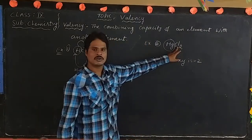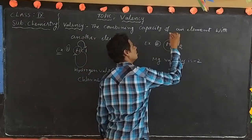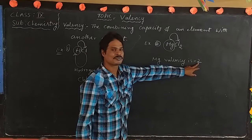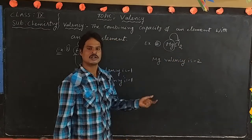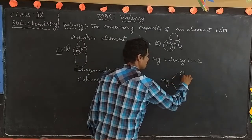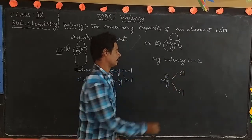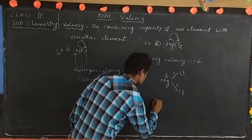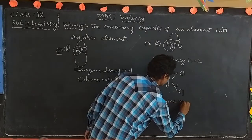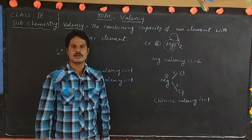What is the valency of chlorine? Here, one magnesium attaches to two chlorine atoms. Magnesium valency is two. These two valencies are shared with two chlorine atoms, so each chlorine gets one valency. That is why chlorine valency is one.